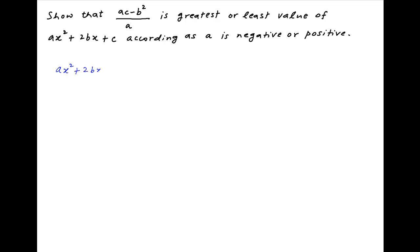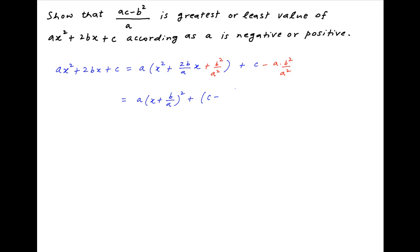ax squared plus 2bx plus c can be expressed as a times, in brackets, x squared plus 2b upon a times x plus c outside the brackets. Now add b squared upon a squared inside the brackets, and therefore subtract a times b squared upon a squared outside the brackets. Therefore this expression is equal to a times x plus b upon a, whole square, plus ac minus b squared upon a.